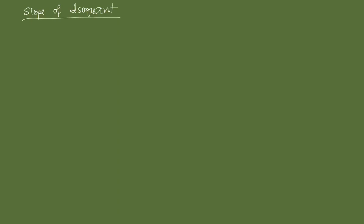We have two concepts: marginal product of labor (MPL) and marginal product of capital (MPK), and it's assumed that both are greater than zero. As labor increases, holding capital constant, MPL contributes positively to total production — and the same is true for capital. The slope of an isoquant is essentially equal to the change in capital over the change in labor along the same isoquant, holding Q constant. We want to prove that this slope is indeed negative.